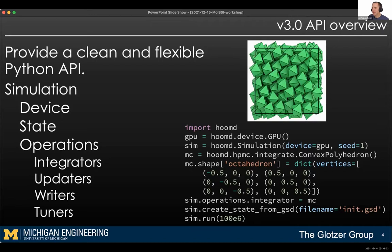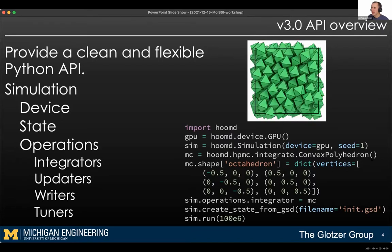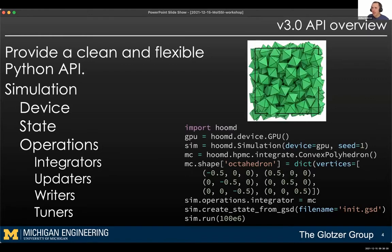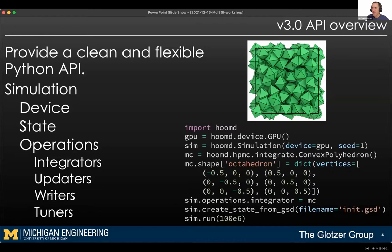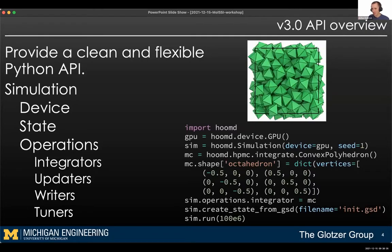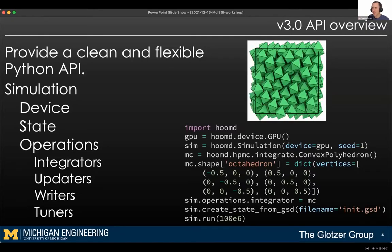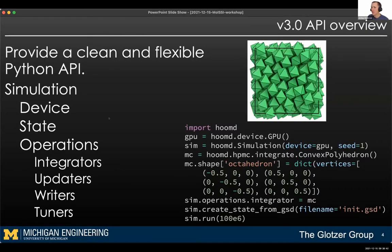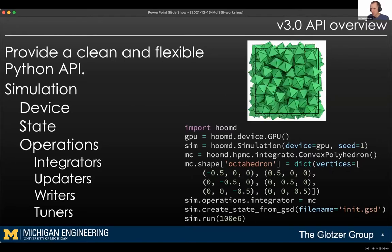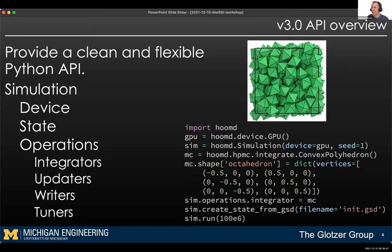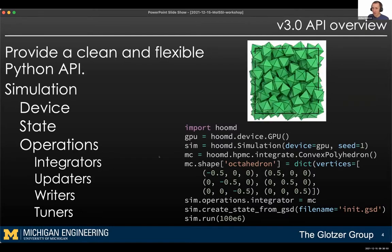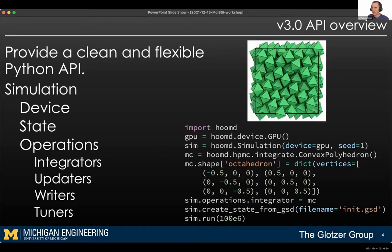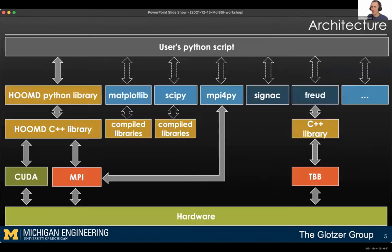You could swap the Monte Carlo integrator out for a molecular dynamics integrator that integrates the equations of motion forward in time. There are also other objects you can apply that update the system state — for example, to compress the system. Writers allow you to write out a trajectory file for animations or post-process analysis. And tuner objects can tune the performance of the simulation, adjusting parameters that don't affect correctness but can affect performance quite a bit.